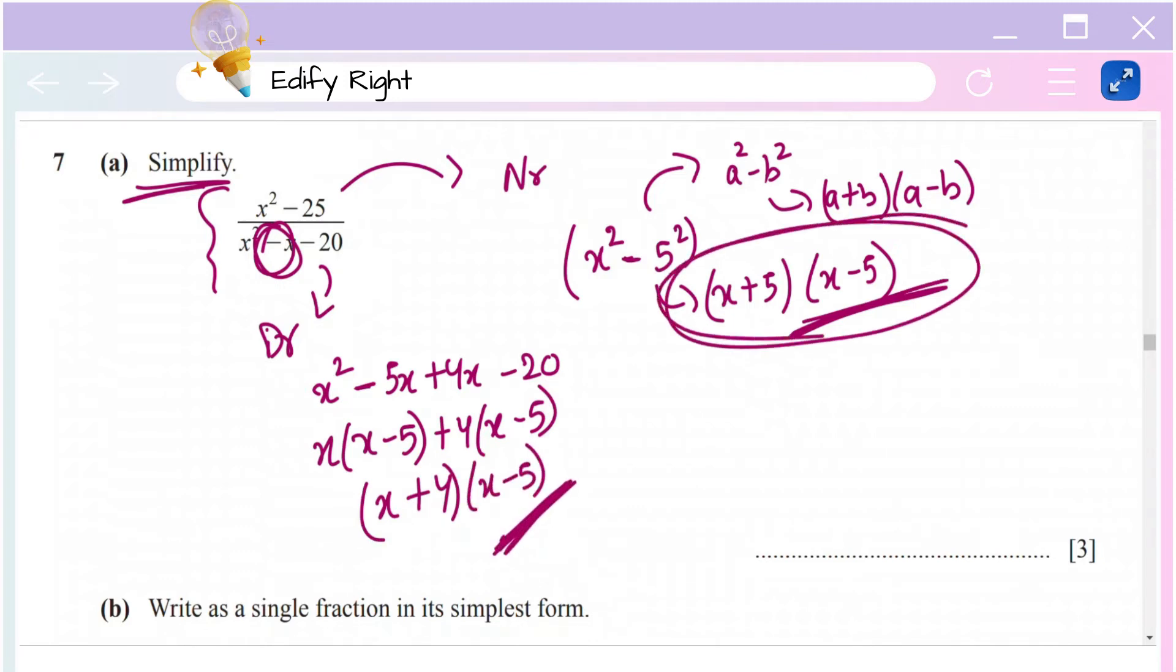Now that we have the numerator and denominator, let's put them together. That would be (x + 5)(x - 5) divided by (x + 4)(x - 5). This bracket and this bracket get cancelled.